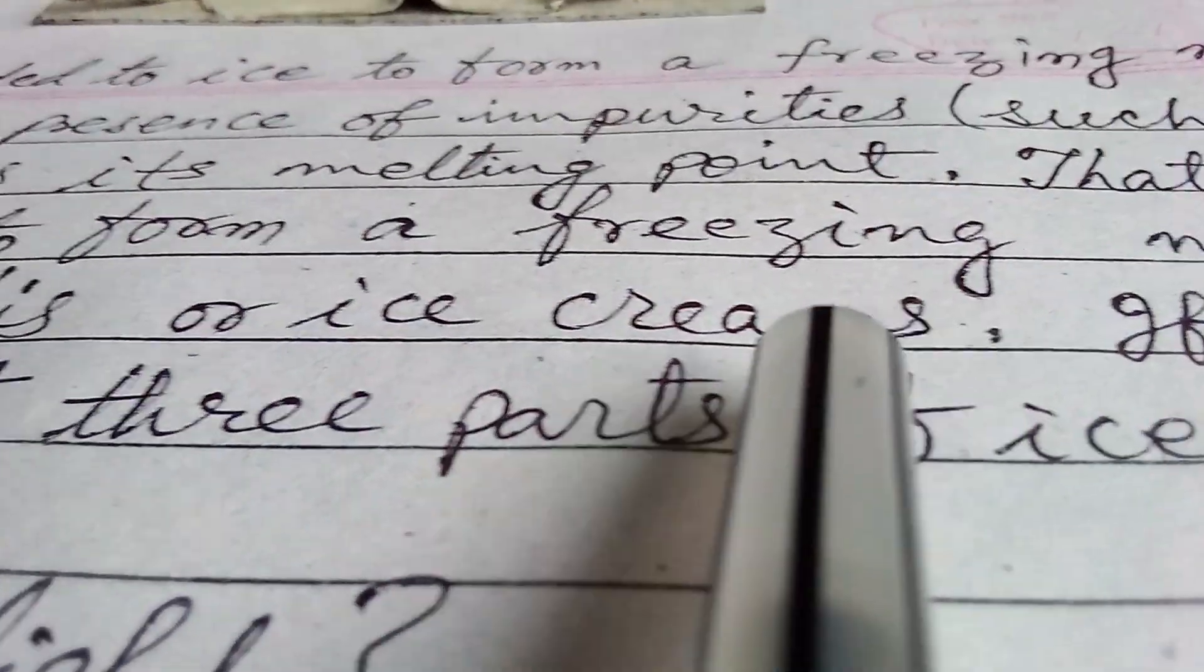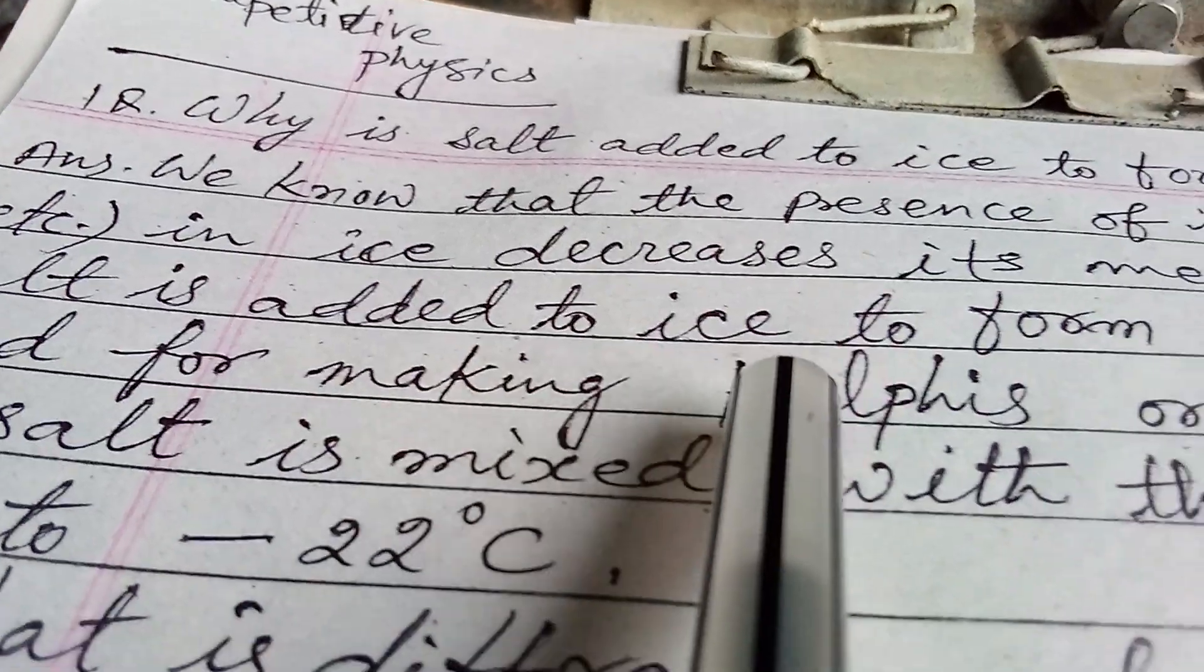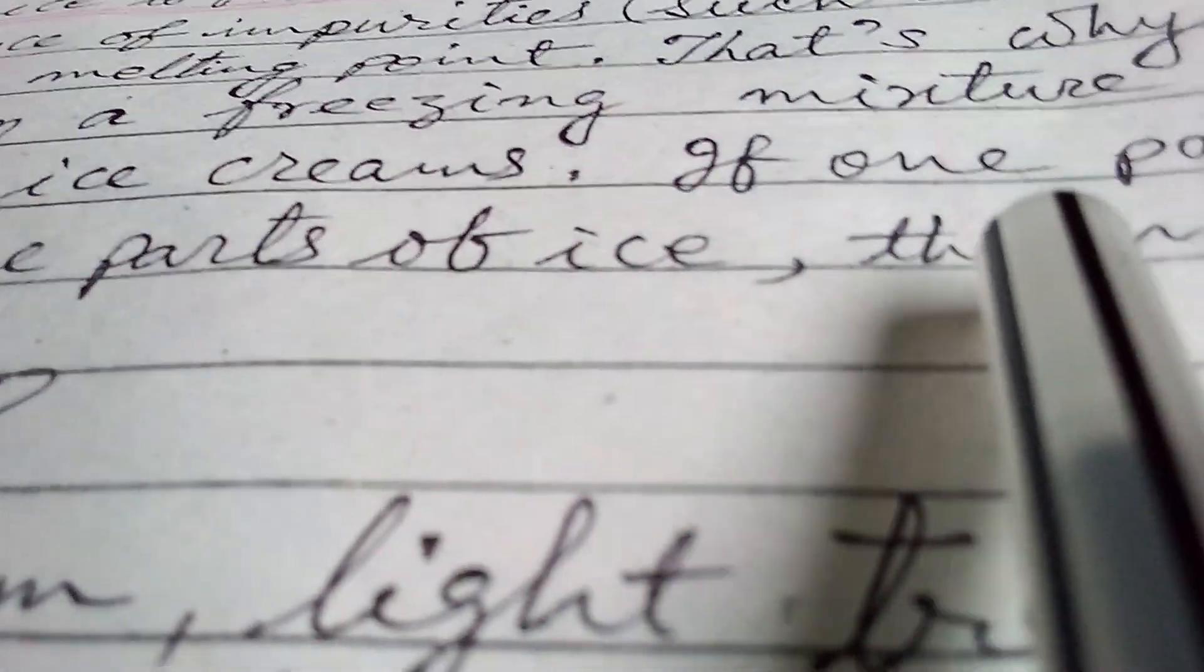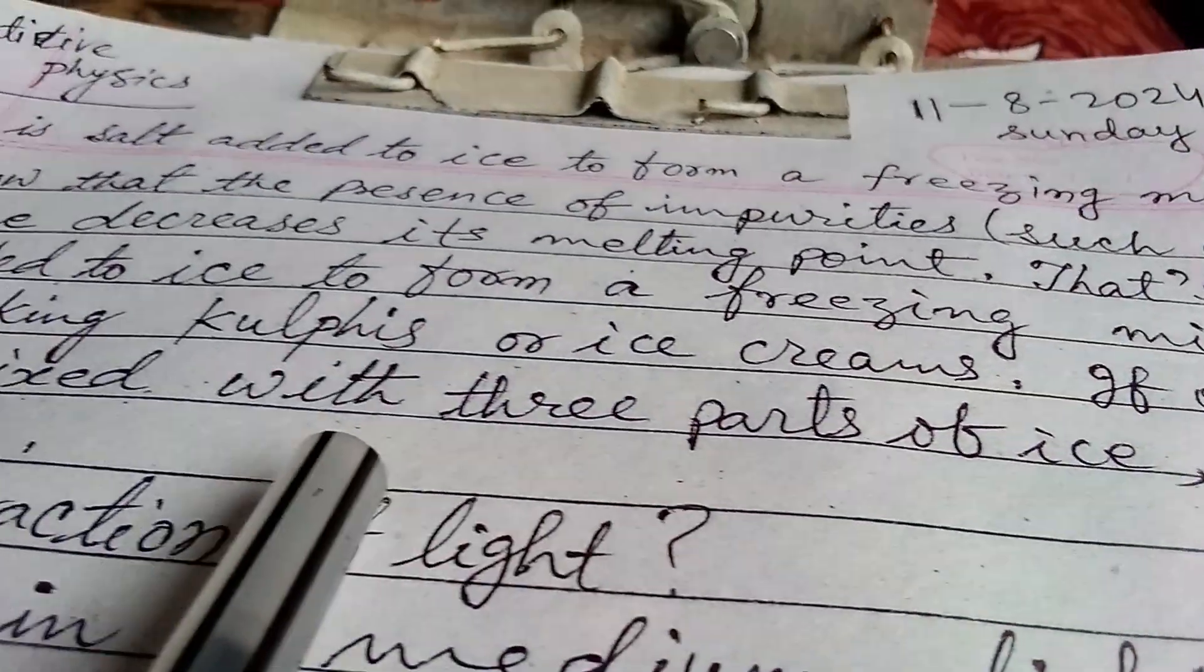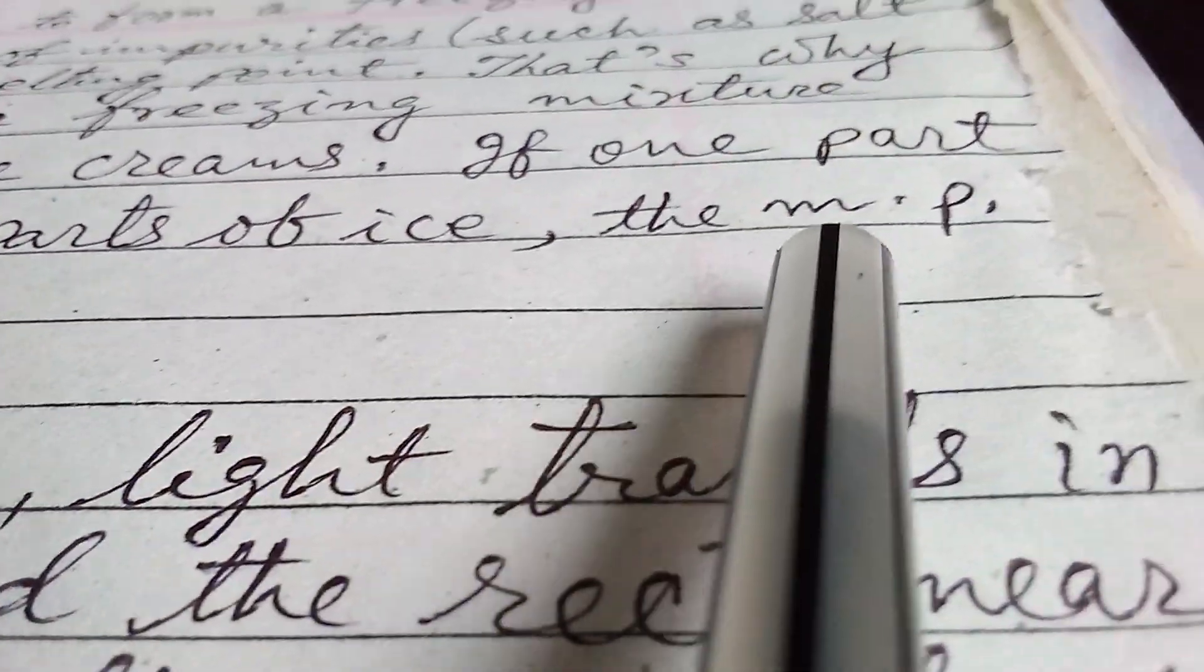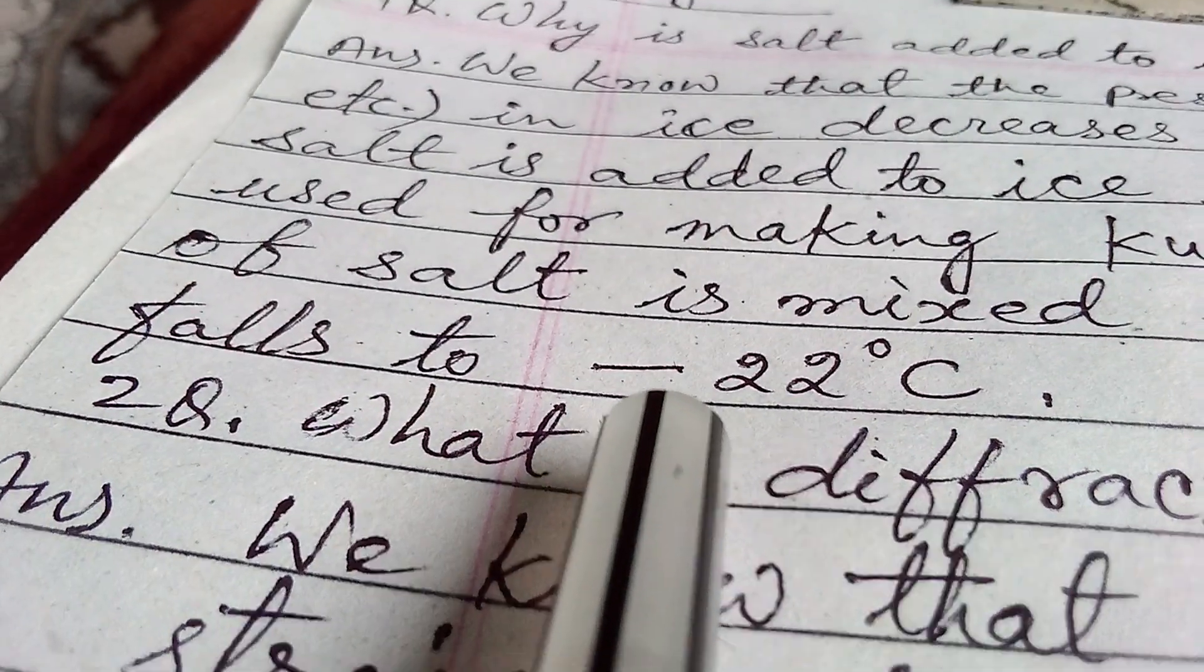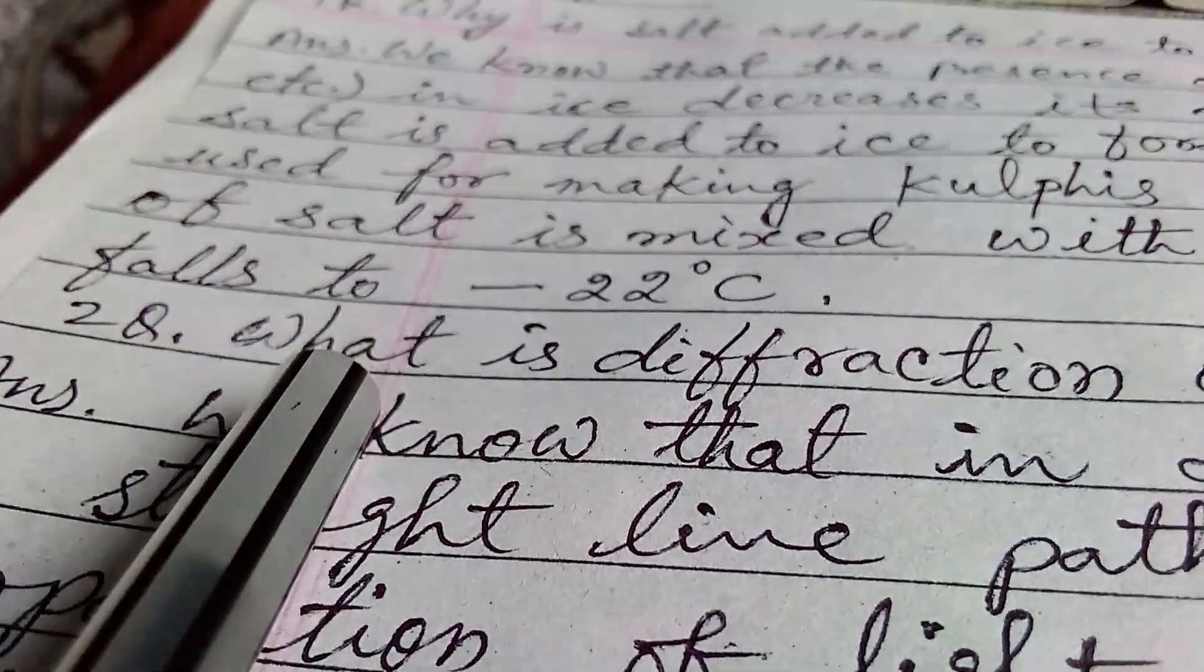It is used for making cookies or ice creams. If one part of salt is mixed with three parts of ice, the melting point falls to minus 22 degrees Celsius.